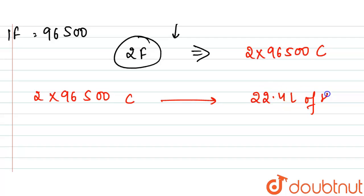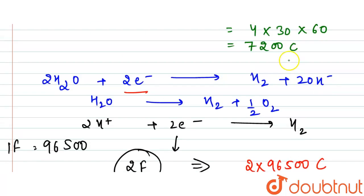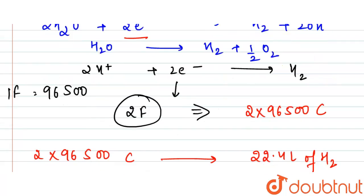At NTP conditions, we have 22.4 liters of any gas. For one coulomb, we will have 22.4 upon two into 96500. But we were having how much quantity of electricity? 7200 coulombs.